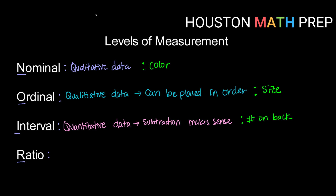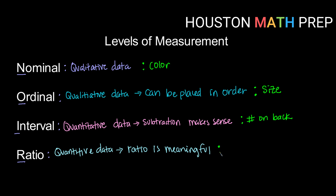The highest level is ratio level. With ratio level we have all the qualities of nominal, ordinal, and interval, but now we add on — we're dealing again with quantitative data — the idea of something being double or something being half as much being meaningful. So a ratio is meaningful. Ratio data might be the height of the players — someone being twice as tall is meaningful — or the age of the players: I am twice as old or 1.5 times as old as another player.